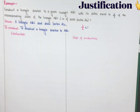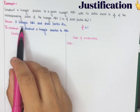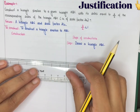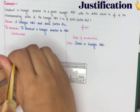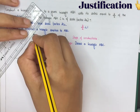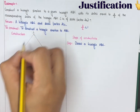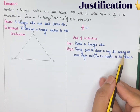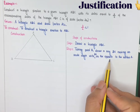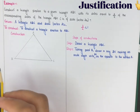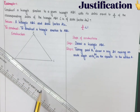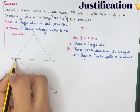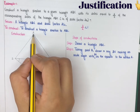Construction steps: Step 1 — you are given triangle ABC, draw triangle ABC. Step 2 — taking point B, draw a ray BX making an acute angle with BC on the opposite side to vertex A.